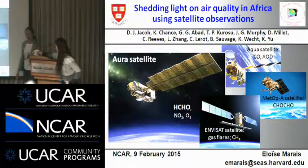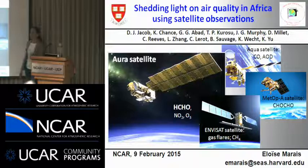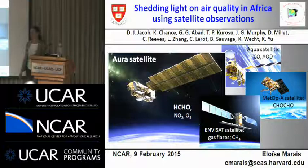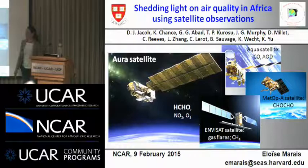The running theme through this talk is going to be the African continent. When I attended my first few lectures in my first year in graduate school, I noticed that any global study that we covered sort of carried Africa along, but without any deep analysis. It was evident that atmospheric composition in Africa is very poorly understood, and this is largely due to the dearth of observations available across the continent. I was in a very good position working with Daniel and his collaborations with the Center for Astrophysics to make use of satellite observations that they retrieve. The workhorse in my work is formaldehyde observations from the ozone monitoring instrument on board the Aura satellite.